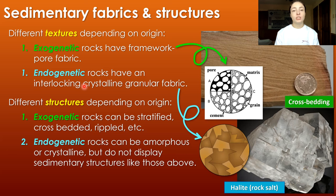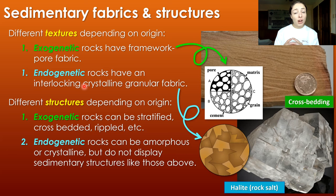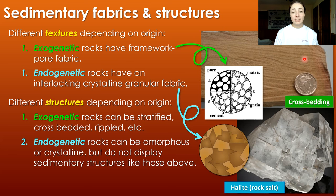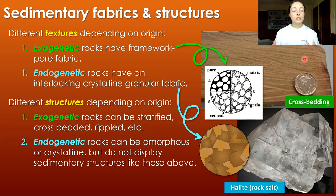Structures and textures differ basically in scale. Textures typically refer to very small-scale features like the internal framework of rocks — things you might need a microscope for, or at least a hand sample. Structures define very large-scale features. For example, we can see in this rock there's some crossbedding — that's typically a structure, and structures are very rarely seen in hand sample. You kind of have to look at a big outcrop to see structures; they're just larger scale.